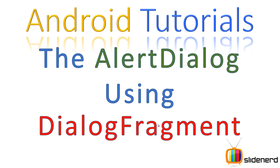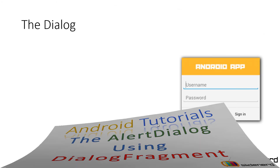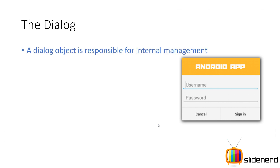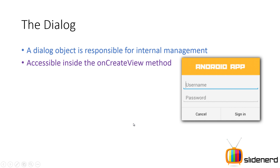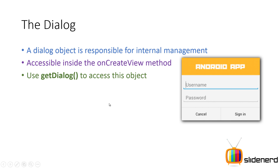So now let's get started. Let's talk about what is the dialog. A dialog object is responsible for managing the internal state, like setting the title, maybe setting a custom view, handling the buttons like yes and no. It's accessible inside the onCreateView and the onCreateDialog method. You can use getDialog to access this object and set properties on it using set methods like setTitle and setView.